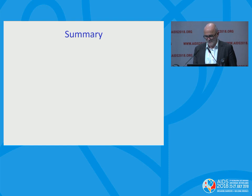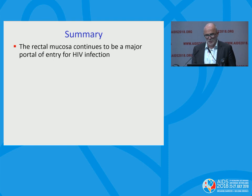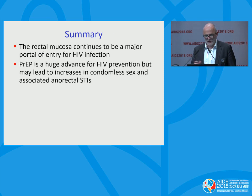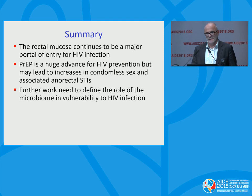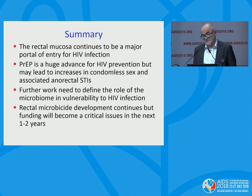To summarize: the rectal mucosa continues to be a major portal of entry for HIV infection. PrEP is a huge advance and should be rolled out as quickly and broadly as possible, but it does seem to be linked to increases in anorectal STIs. The microbiome is fascinating — it's popping up everywhere in the cancer field and in HIV — and we need to understand more about its role in mucosal vulnerability to STIs, including HIV. As for rectal microbicides, we will see. There's funding and activity for the next one to two years, but thereafter it could be quite problematic. Thank you very much.